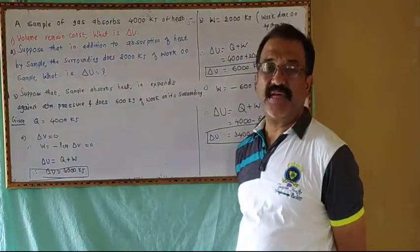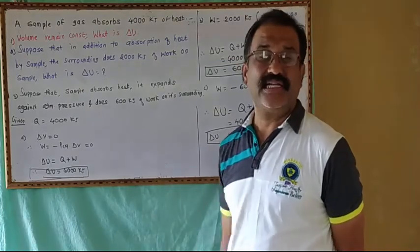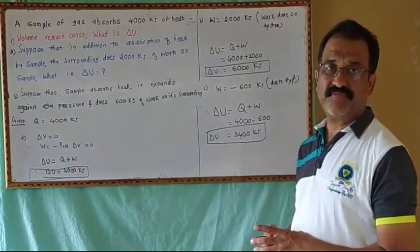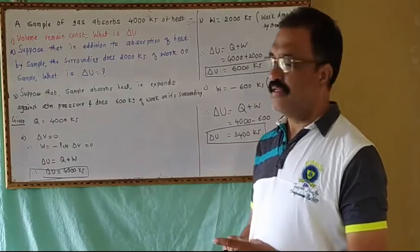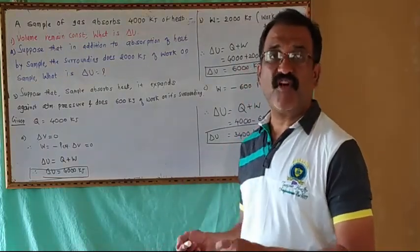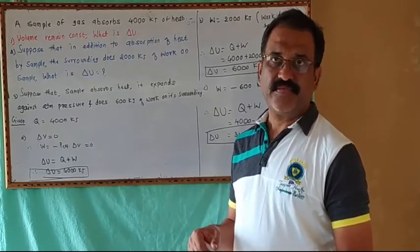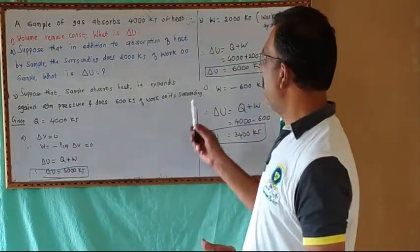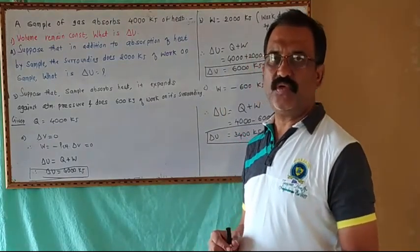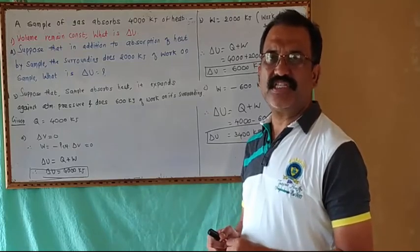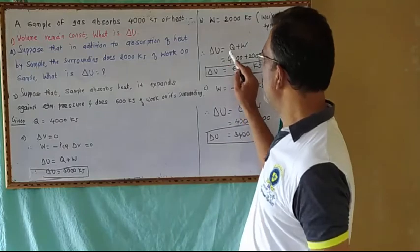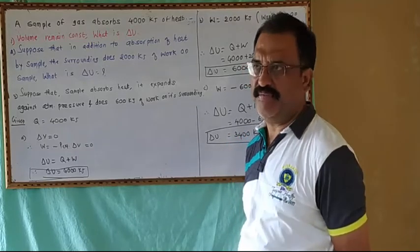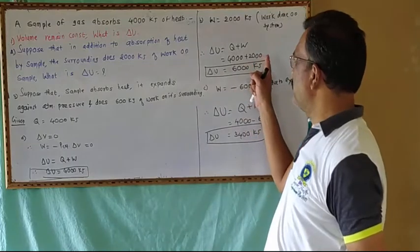First law of thermodynamics: energy can neither be created nor destroyed, but can be converted from one form into another — that is the law of conservation of energy. When one form of energy disappears, an equivalent amount of another form appears. Using these statements, the mathematical equation for the first law is: ΔU = Q + W, where ΔU is the internal energy change.